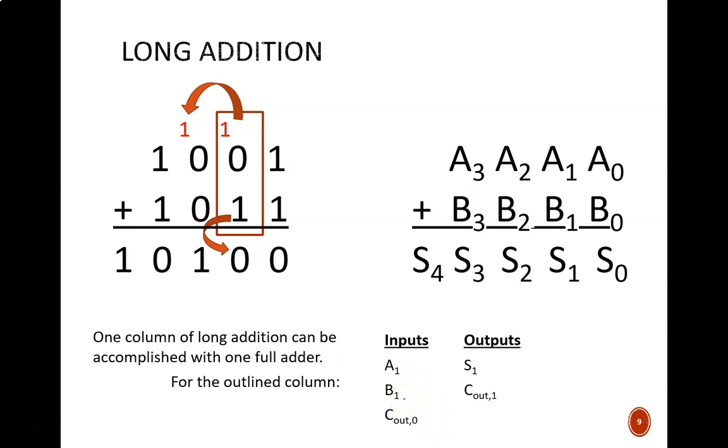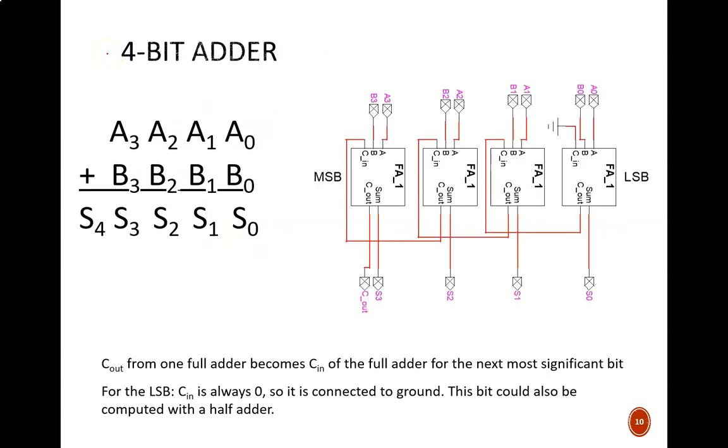So what happens to the cout1 output? It will be added to a2 and b2. And here we see that same idea in circuit form. With addition of 4-bit numbers, we need four separate full adders, one for each bit of the inputs.